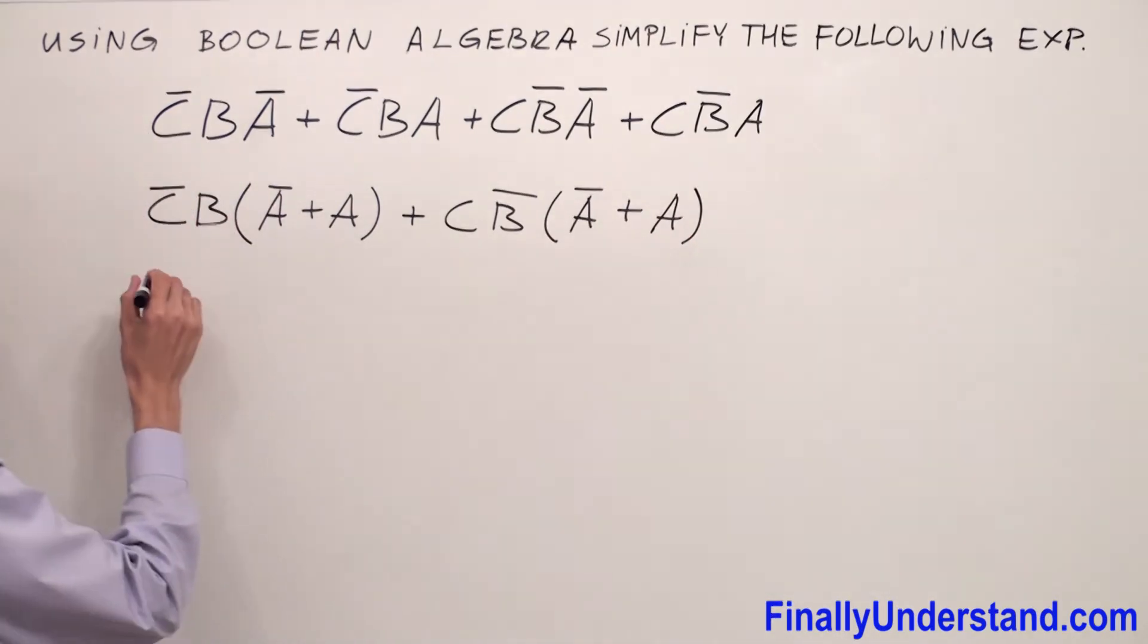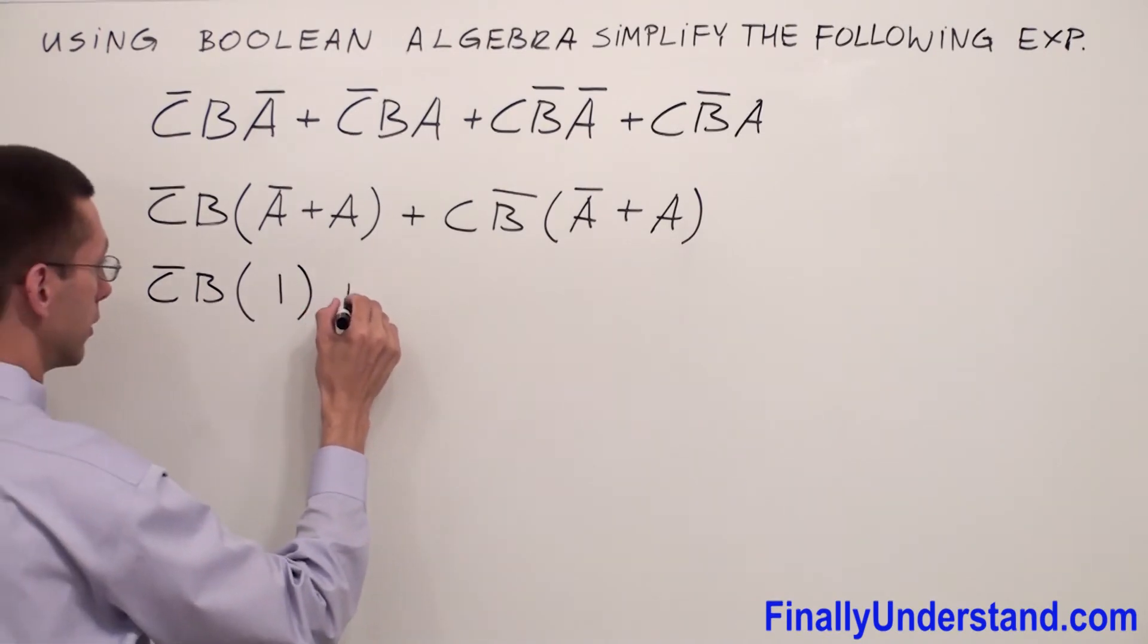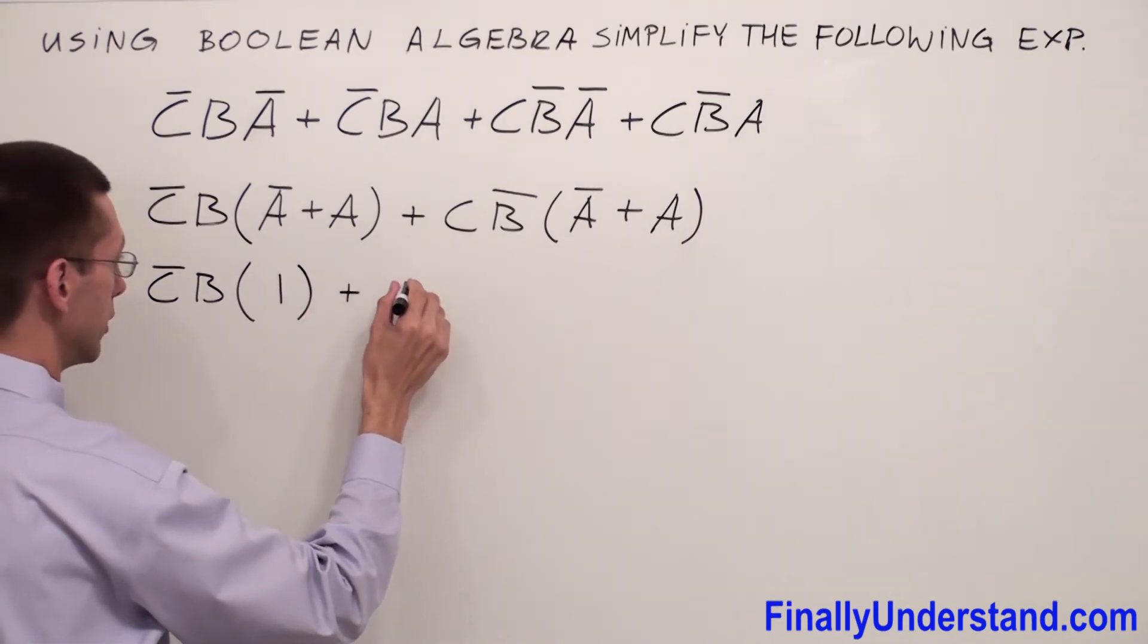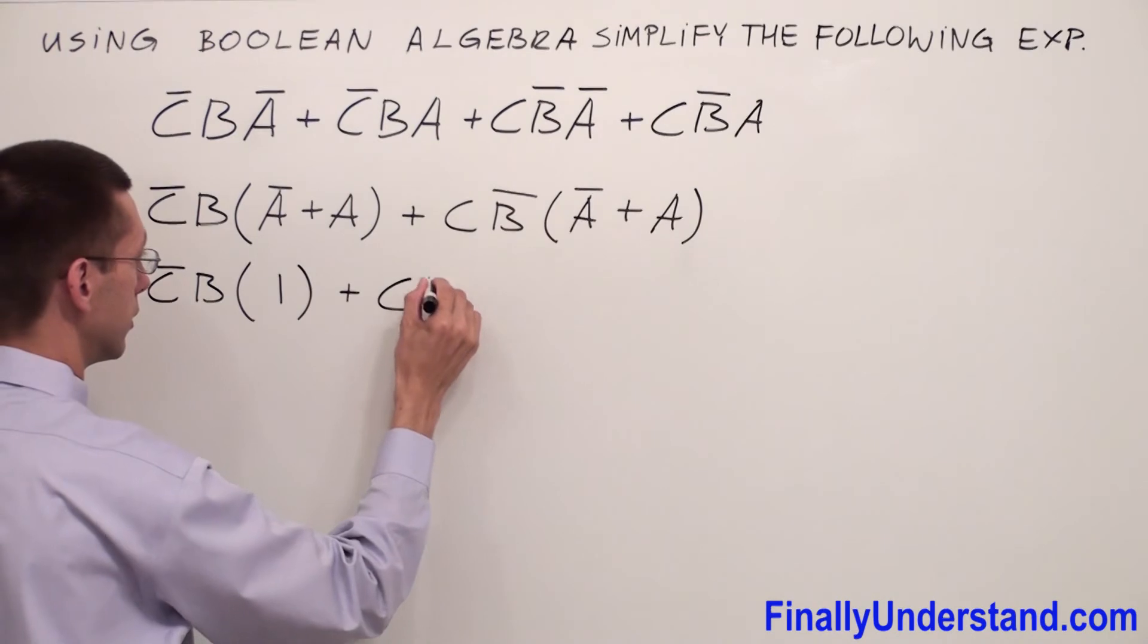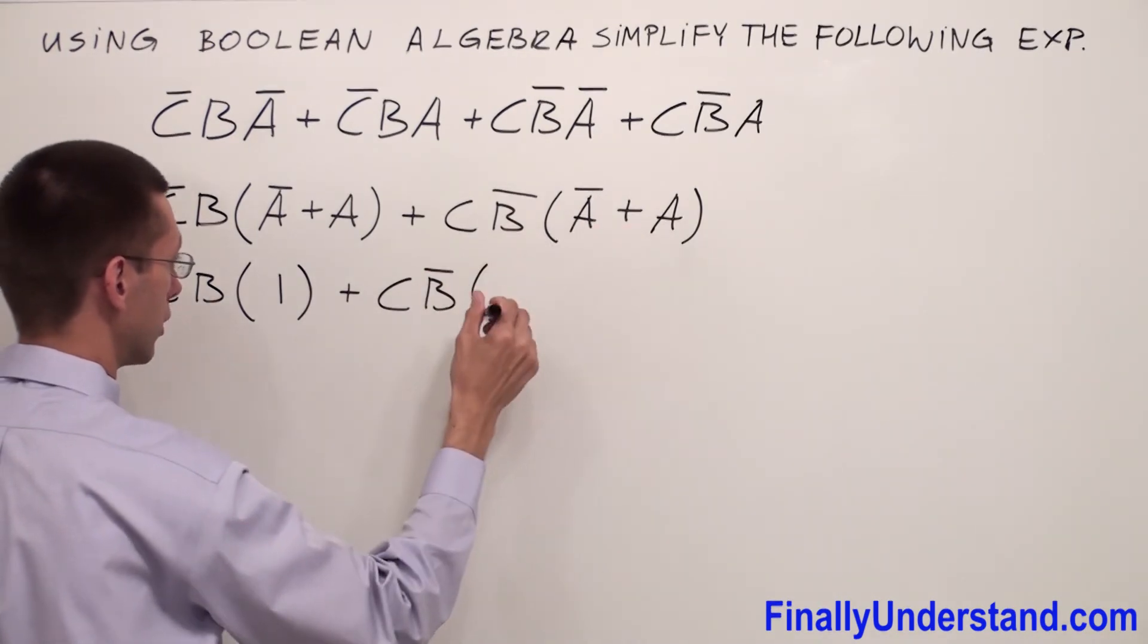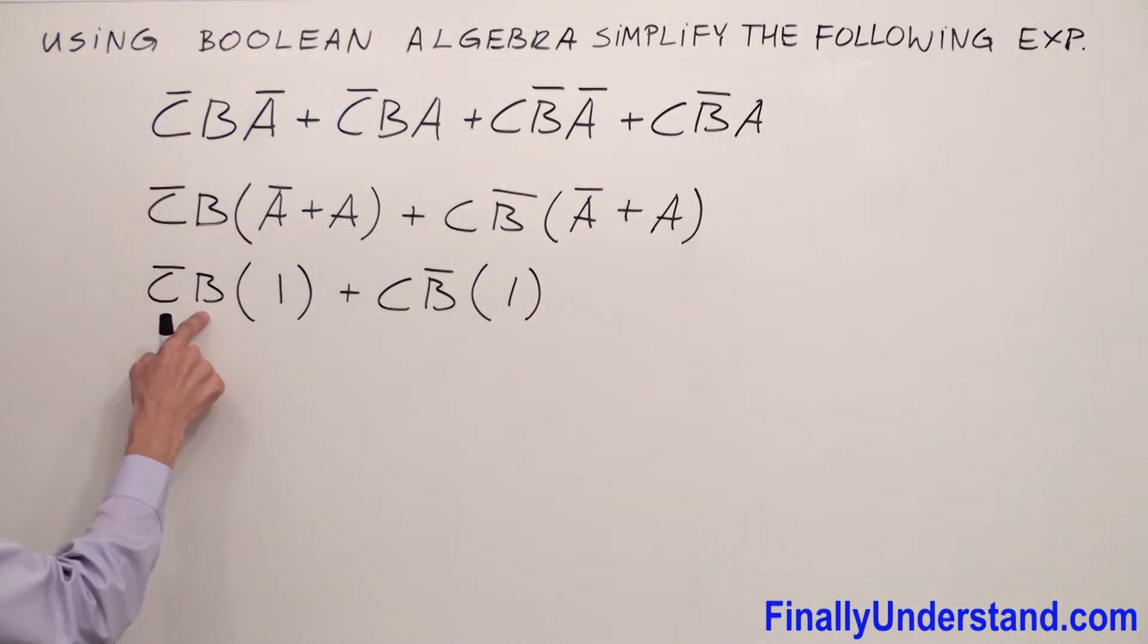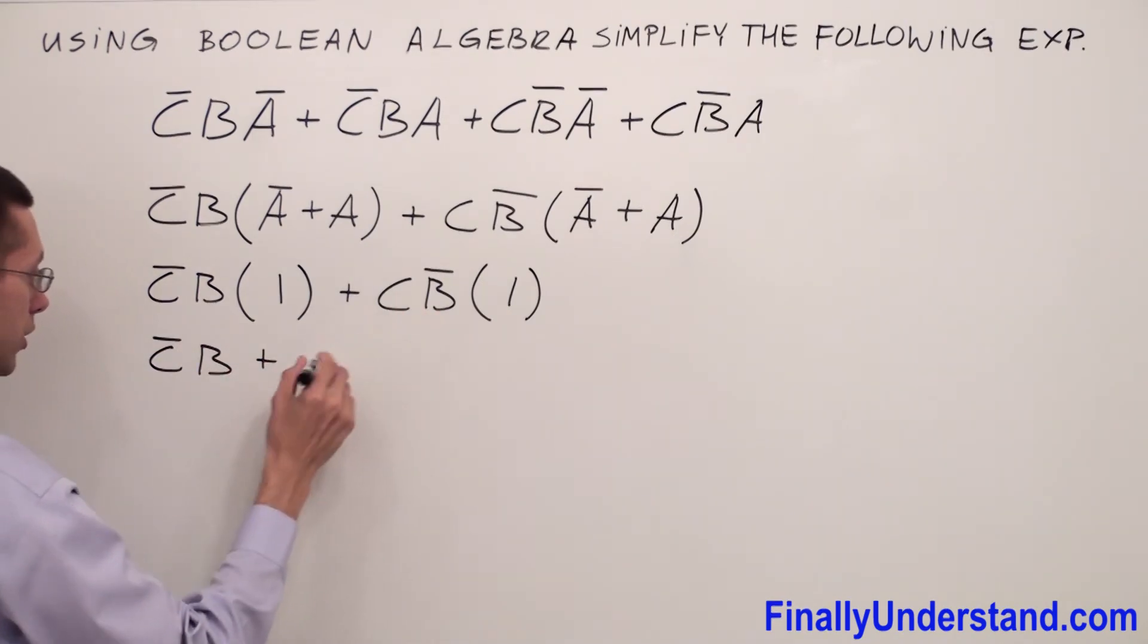Remember we said that anytime we have complements together they're going to give me always one. I'm going to have the same story over here. Ā or A is also equal to one, and CB̄ times one is CB̄ or C̄B.